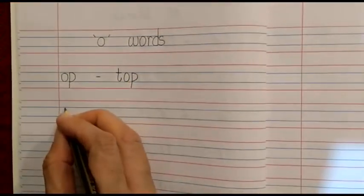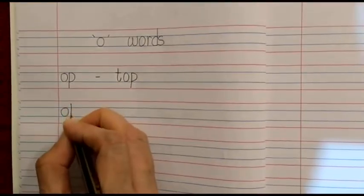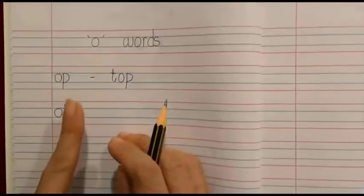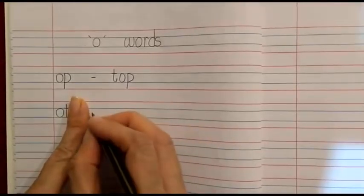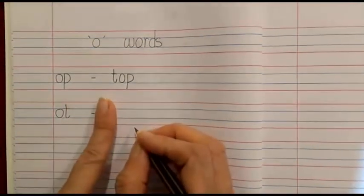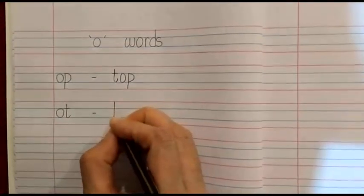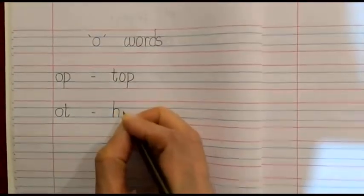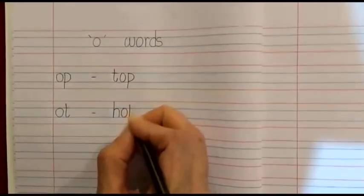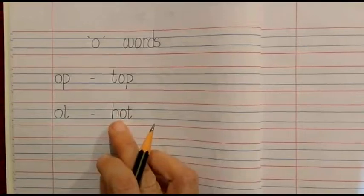The next O family word is Ot. Again, after writing Ot, we are going to place our index finger, then we are going to put a dash, then again our index finger and the word. What we are going to write is: Ha, Ot — Hot.